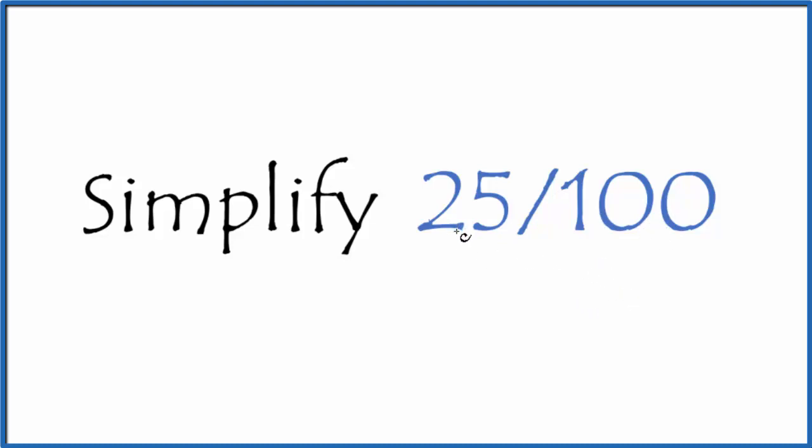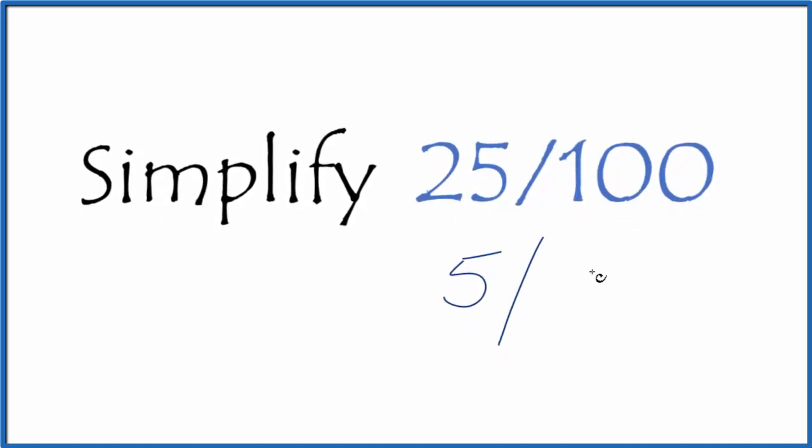So I know that 5 goes into 25 five times, and 5 goes into 100 twenty times. 20 times 5 is 100. But as I look at this, I see that 5 also goes into 20. So I could divide 5 by 5, that would give me 1. And I could divide 20 by 5, that will give me 1 fourth.